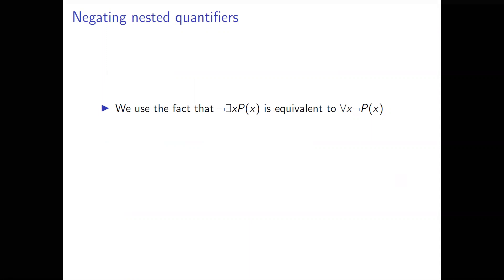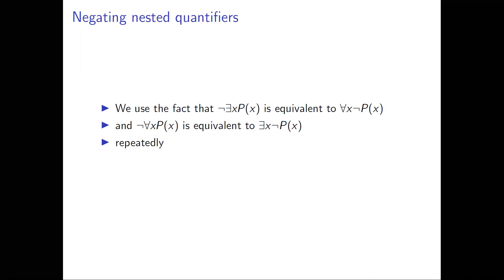We saw in the last video some useful facts about negating propositions with single quantifiers. One of the facts we saw is that not-exists-x P(x) is equivalent to for-all-x not-P(x). We also saw a similar fact: not-for-all-x P(x) is equivalent to exists-x not-P(x). We're going to use these facts to negate some propositions with multiple quantifiers.